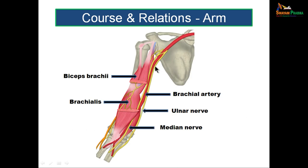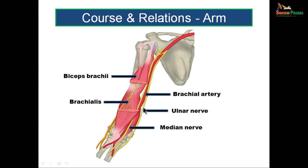In the arm, the median nerve lies lateral to the brachial artery — which is the continuation of the axillary artery — up to the middle one-third of the arm. At the middle one-third, which is the same area where the coracobrachialis muscle gets inserted, certain changes take place. The median nerve, which was lateral to the brachial artery in the proximal part, crosses the brachial artery superficially and runs on its medial side in the lower one-third. So in the middle of the arm, the median nerve crosses the brachial artery from lateral to medial in a superficial way, at the level of insertion of coracobrachialis.